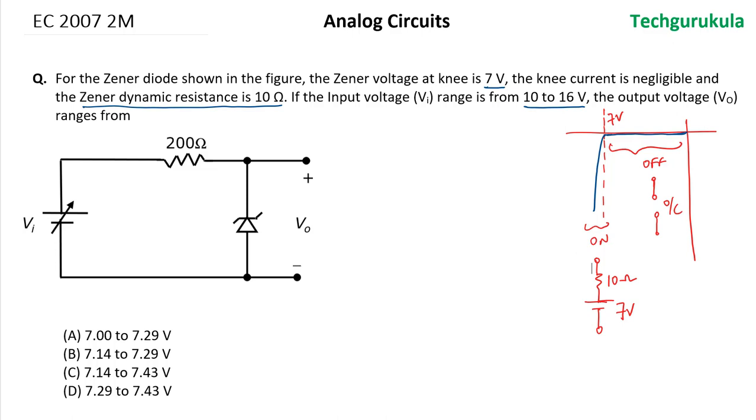To investigate if the Zener diode will be in breakdown region or not, the first thing we do is substitute this with the open circuit. When we substitute the Zener diode with the open circuit, the entire input voltage gets across the Zener diode, which will be 10 volts, which is beyond the breakdown voltage.